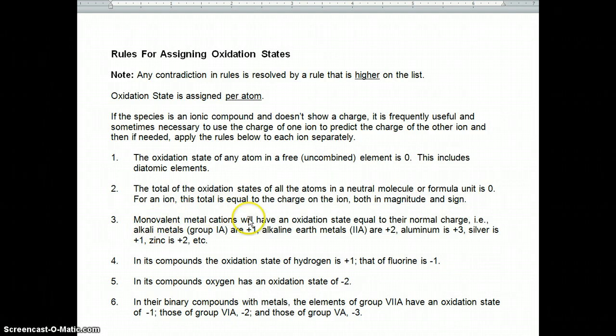When we have cations in group 1, they're plus 1. Cations in group 2, like magnesium, plus 2. Aluminum is plus 3. And then some other common ones: silver plus 1, zinc plus 2, cadmium plus 2.